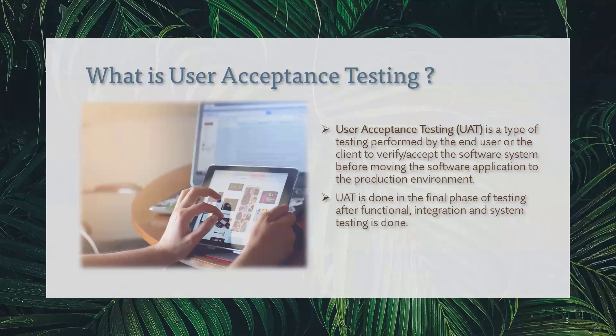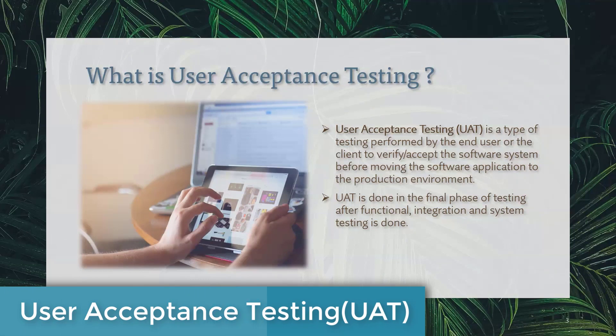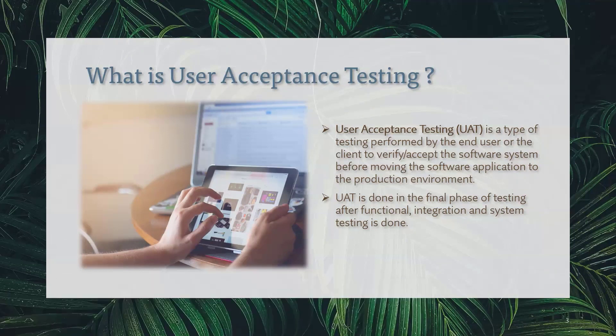What is User Acceptance Testing or UAT? This is a type of testing performed by the end user or the beta customer of any organization. The client wants to verify or accept the software system before moving the software application into production. Sometimes the end user does this testing, or sometimes we have an in-house UAT testing team. UAT is done in the final phase of testing after functional, integration, and system testing, where the testing team verifies complete functionality based on business requirement documents or business-related use cases.